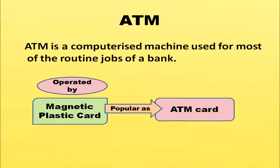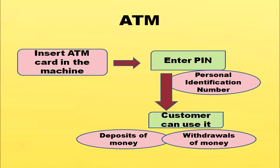Automated Teller Machine (ATM) is a computerized machine used for most routine jobs of a bank. For operating this ATM, a magnetic plastic card is given to the customer which is known as an ATM card. The customer has to insert the ATM card in the machine, then enter the PIN — Personal Identification Number — and then use it either for depositing or withdrawing money.